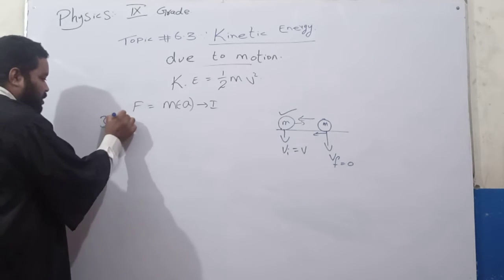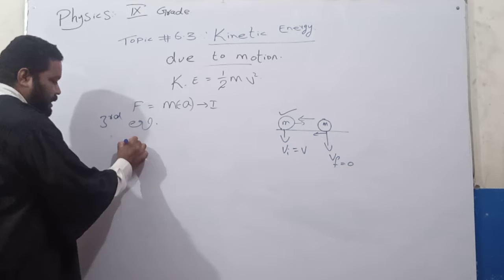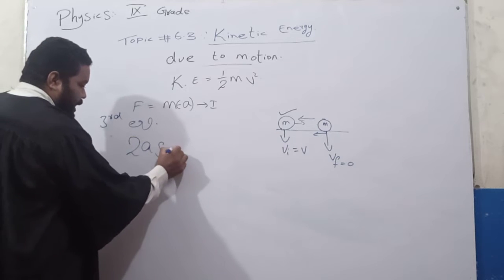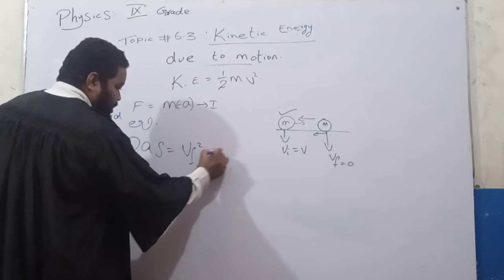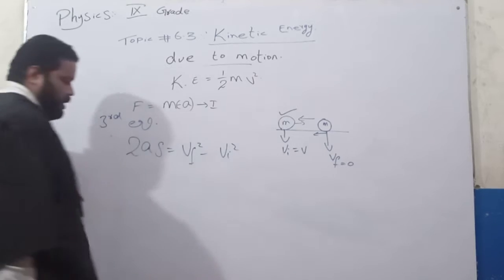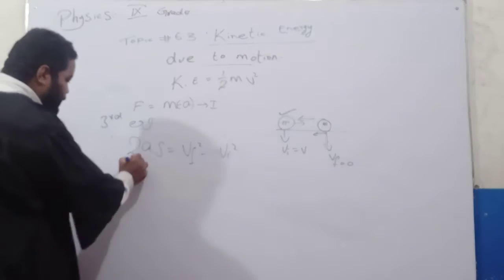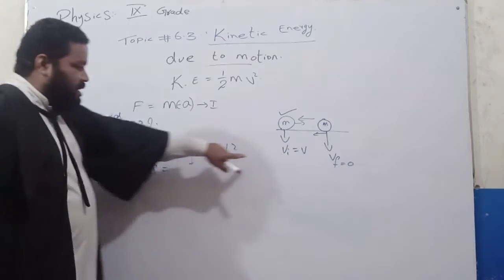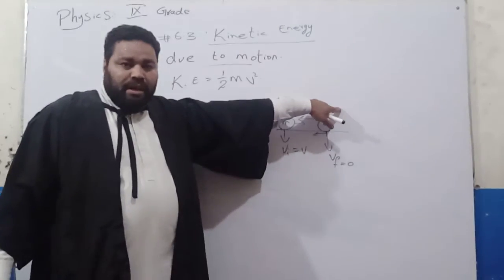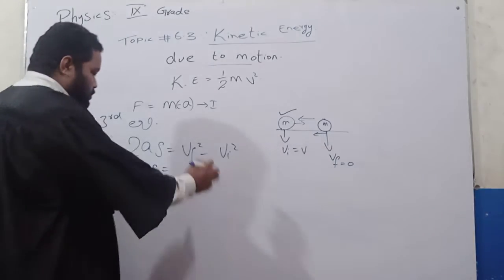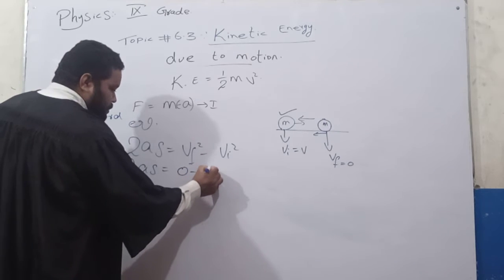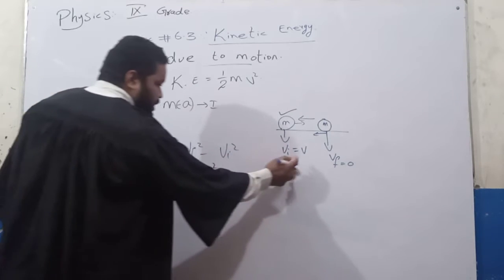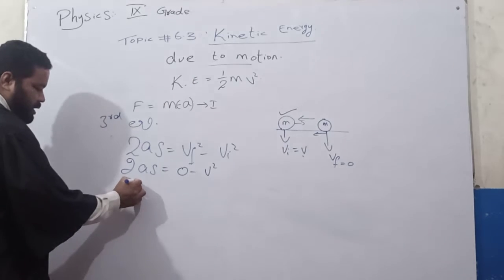Now when the third equation of motion will be utilized, that is 2as equals to vf squared minus vi squared. We have to put, because the body comes at rest after some time, so the final velocity is equal to 0 minus v squared. So the initial velocity is equal to v.